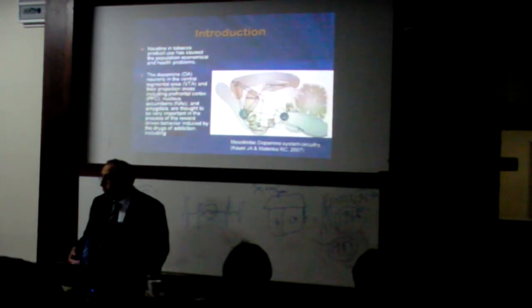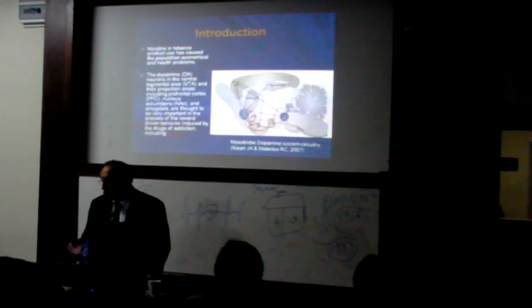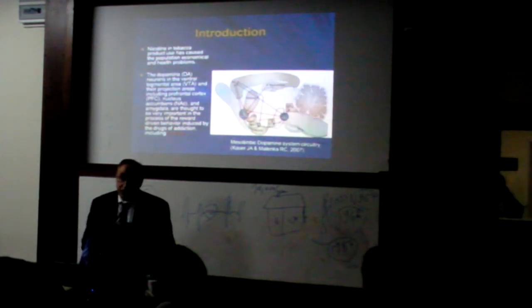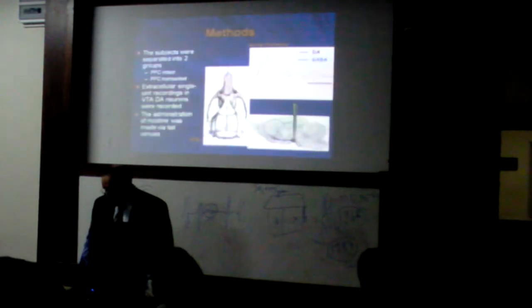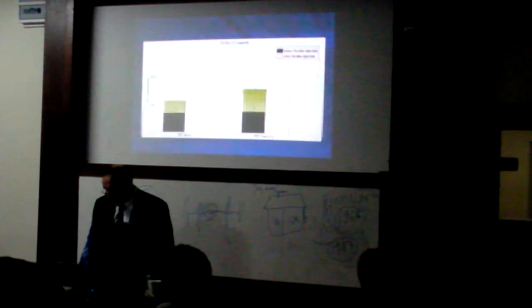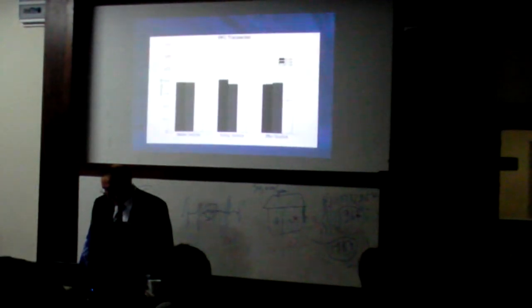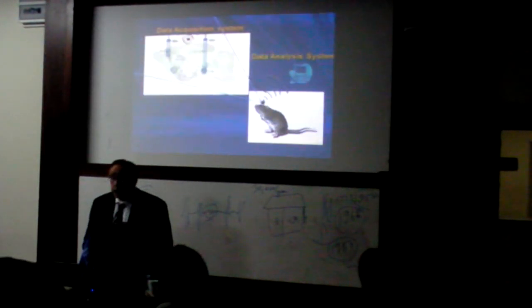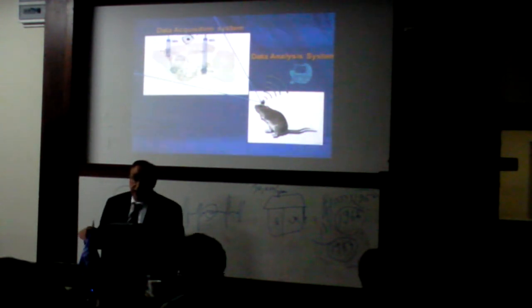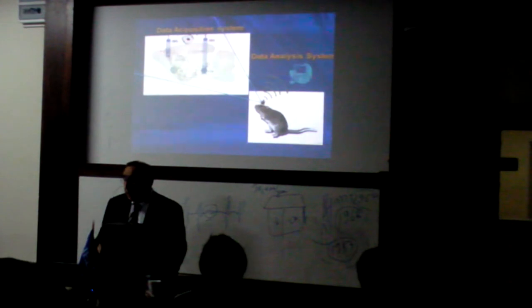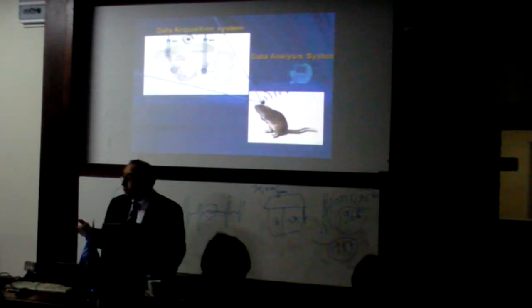What we are trying to understand first is the mechanism. Using multi-channel electrode recording from both sides, we look at how neurons talk to each other, connectivity, which one is projecting. Second, we are trying to develop drugs to cut the relation between these two. In the lab, we totally implant 64 electrodes in PFC, 64 in VTA. The animal is free-moving, and we are doing learning memory tests with and without nicotine.